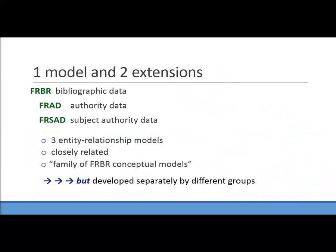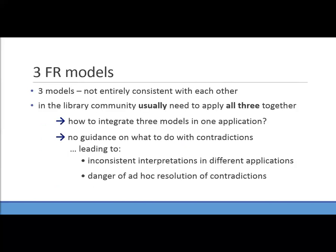So we have one original model, FRBR, and two extensions, FRAD and FRSAD — three entity-relationship models. They're closely related and we speak of them as the family of FRBR conceptual models, but they were developed separately by different groups of people, so the models are not entirely consistent with each other. In the library community you need all three aspects together, but if you want to integrate them into one application, what do you do when there's a contradiction? There was no guidance, and individual applications ended up with ad hoc resolution of contradictions, which broke the idea of a shared framework.